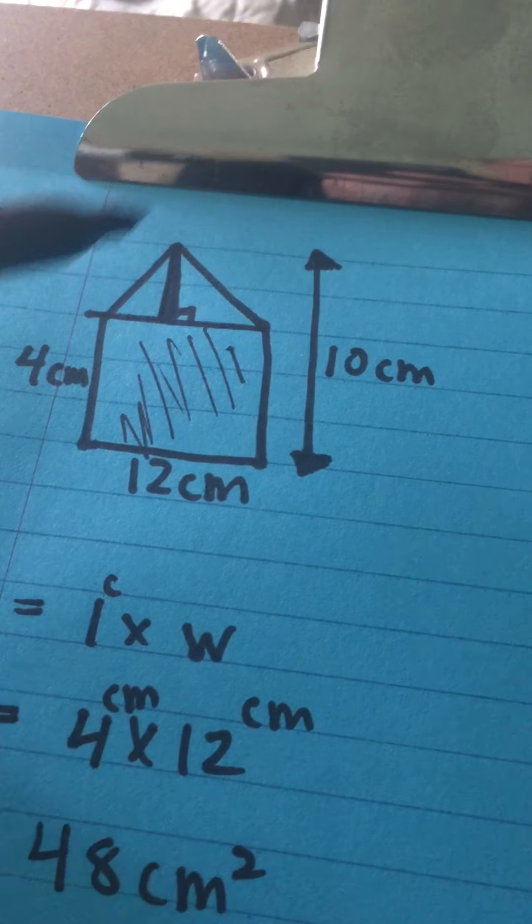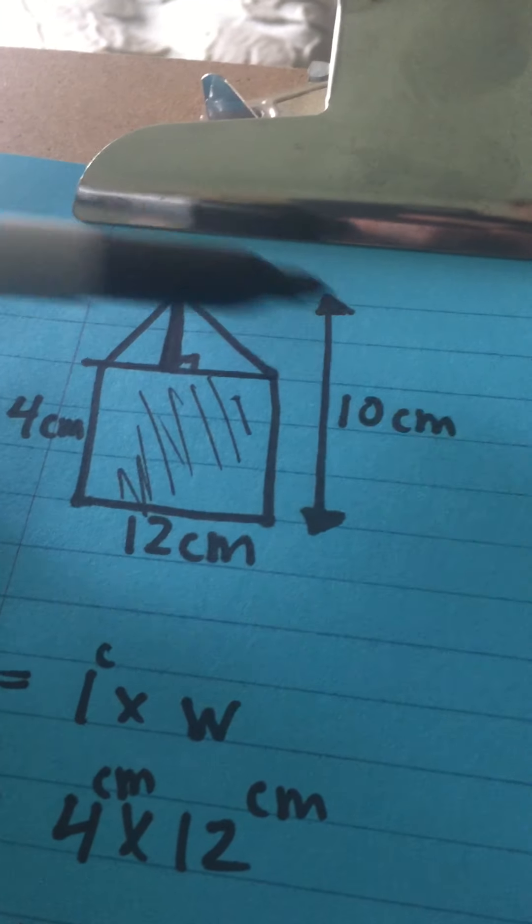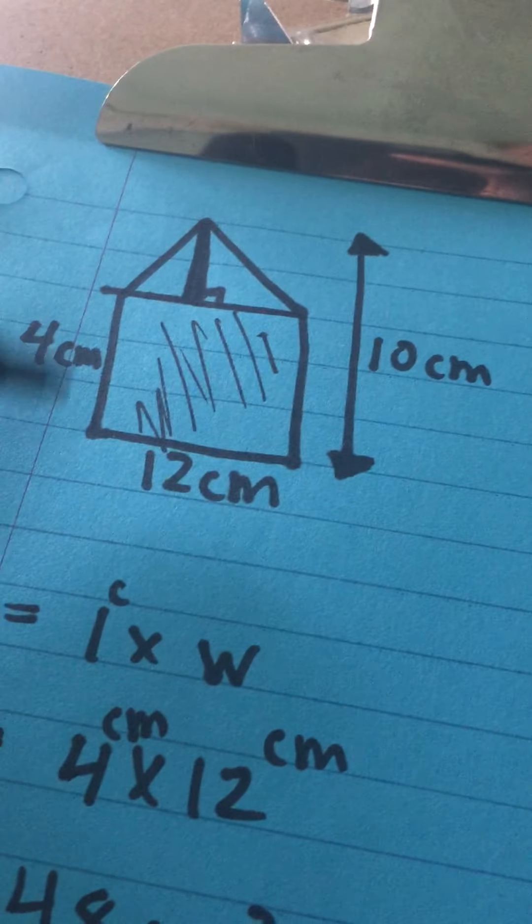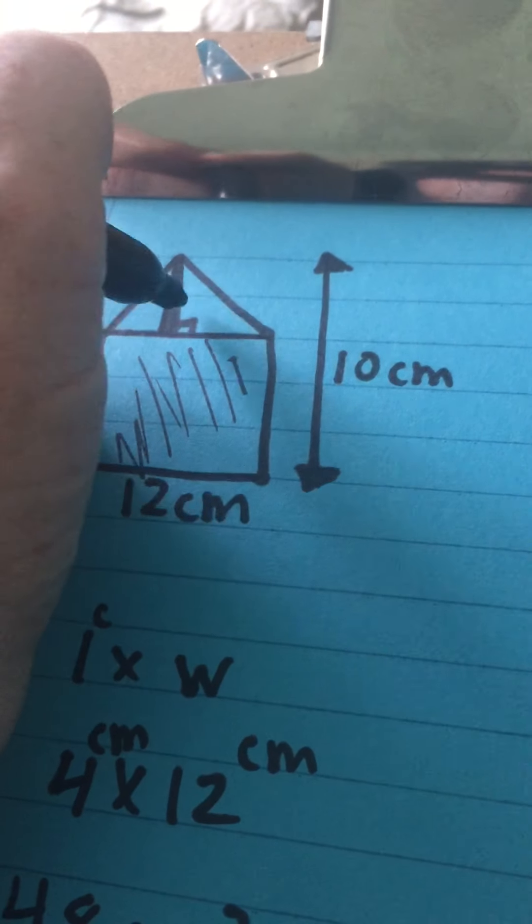Now I know it looks a little bit off because my lines aren't exactly to scale, but with our values we can figure it out. This whole thing is 10, this is 4. How long would this line be? 6 centimeters.